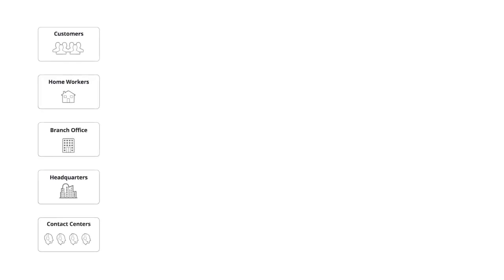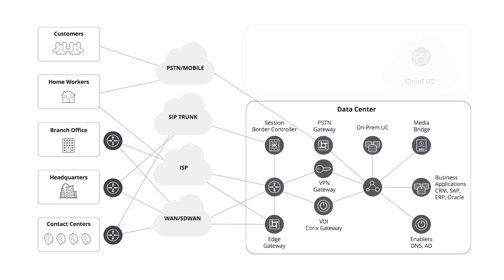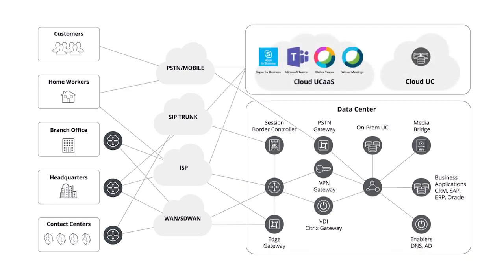So where in my infrastructure do I put this visibility? Here's a typical architecture: the customer, home workers, branch, HQ, and contact centers — attaching across multiple technologies: PSTN, mobile, SIP trunks, internet, WAN, SD-WAN to the data center which hosts a lot of the communication servers. Some of these may even be in the cloud. As you can see, there are lots of edges or demarcation points to help differentiate issues, and that's where to deploy NetScout instrumentation.